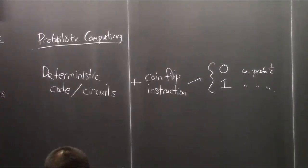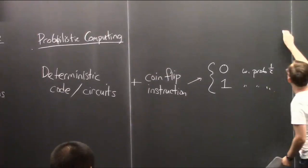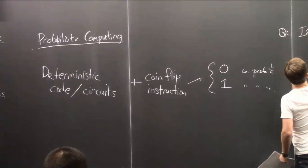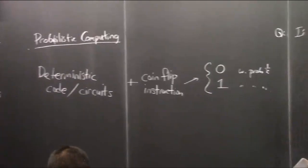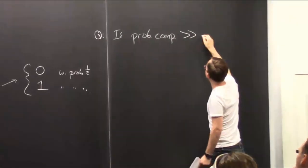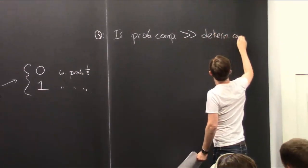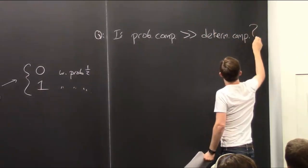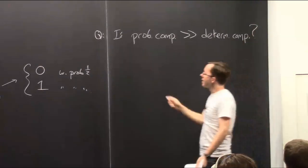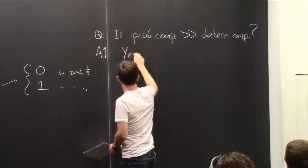Having proposed this model, you can ask: does this somehow give us more power, fundamentally, than we had with just good old deterministic computing? Is probabilistic computing somehow more powerful than classical deterministic computing? There's a certain sense in which one can give a certain answer — yes, sort of by definition.